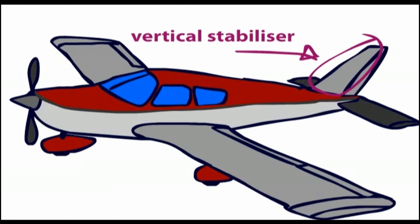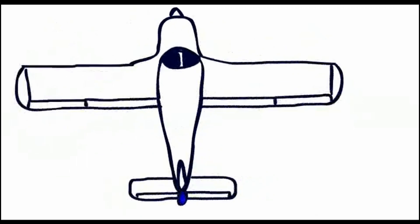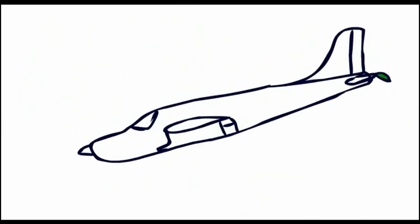The empennage is also made up of the rudder which controls the aircraft in yaw, and the elevators, which control the aircraft in pitch.